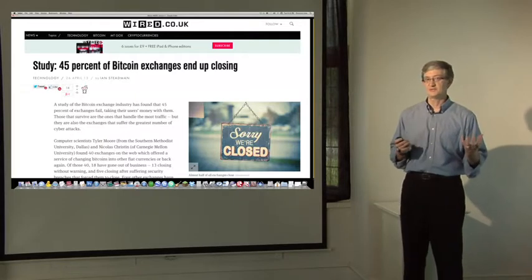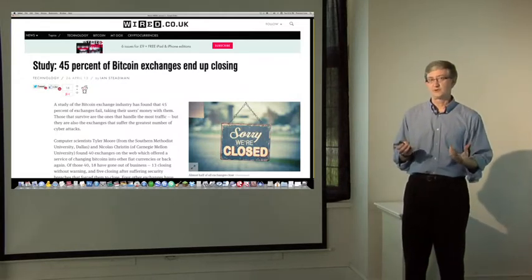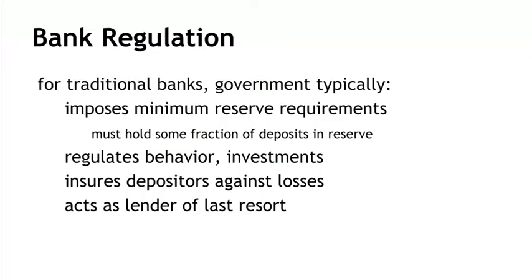This is a cautionary tale about the use of exchanges. Connecting this back to banks, we don't see a 45% failure rate for banks in most developed countries, and the reason is partly because of regulation. For traditional banks, governments regulate in various ways. First, they often impose a minimum reserve requirement — in the U.S., typically 3 to 10% of demand deposits must be kept in liquid form to deal with a surge of withdrawals. Second, regulators often regulate the types of investments and money management methods banks can use, to make sure the bank's assets are invested in relatively low-risk places, because those are really the assets of the depositors.